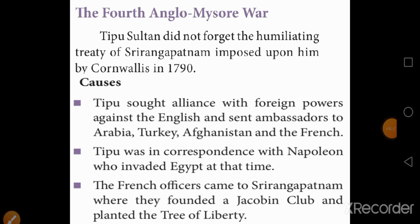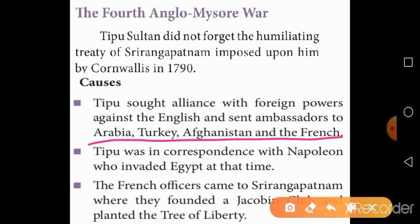Tipu did not forget the humiliation imposed by Cornwallis, so he thought to associate with foreign powers. For that, he sent his ambassador to other countries like Arabia, Turkey, Afghanistan, and France. Then, Tipu Sultan became a part of the Jacobin Club, which was started by French officers who came to Srirangapatnam, and they planted a Tree of Liberty.